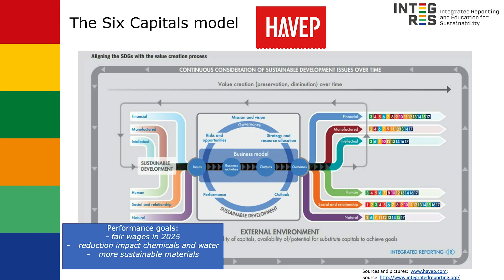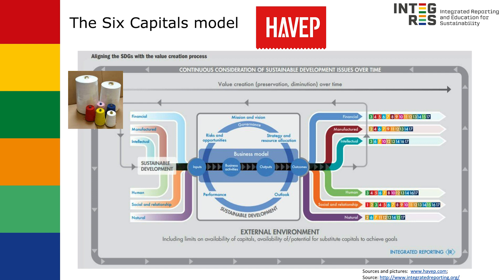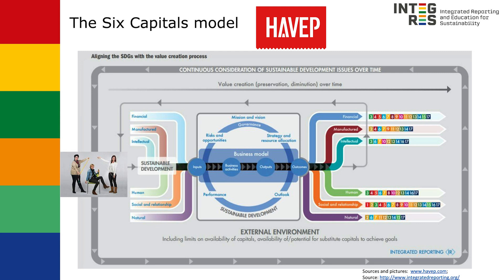The board of the company must always evaluate their performance or goals. HVAP formulated the performance goals as fair wages in 2025, reduction of the impact of chemicals and water, and more sustainable materials. To realize the goals of a company, it needs input. In this model, we distinguish six capitals for the input. The input for the financial capital is equity of 6 million euros. The manufactured assets are the building, machinery, garments and materials — HVAP reports a total value of their fixed assets at 1.4 million euros. Intellectual capital is the knowledge to produce designs and patterns for the working clothes. HVAP has 290 employees — this is their human capital. They even have an academy to share knowledge about safety and sustainability.